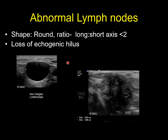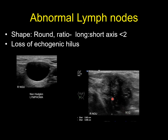An abnormal lymph node will look very different compared to the normal one. The shape tends to be more rounded, and if you measure the ratio of the long to the short axis, this tends to be smaller than two. As you can see here, there is a loss of echogenic hilum — this was found to be a non-Hodgkin lymphoma. If you take the long axis over the short axis, you'll find that this is below two, and here there is no hilum visible at all — this is an SCC node. You can see it is also heterogeneous in echotexture internally.